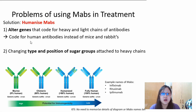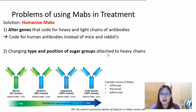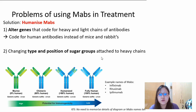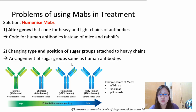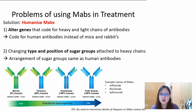Or we can change the type and position of sugar groups. Remember, antibodies are glycoproteins. So we change the type and position of sugar groups attached to the heavy chains of the monoclonal antibodies, so that the arrangement of sugar groups is the same as human antibodies. Therefore, when injected into a person, the person's immune response may not be stimulated because it looks human.